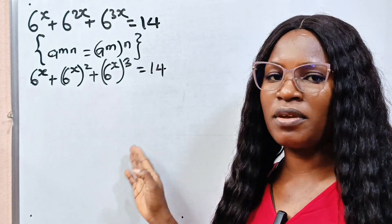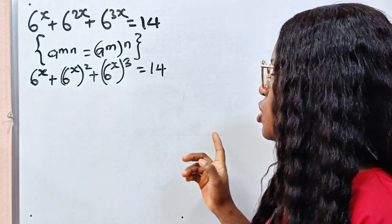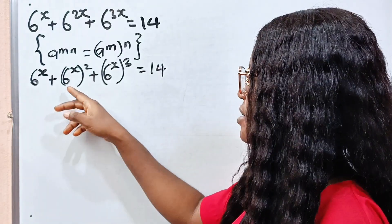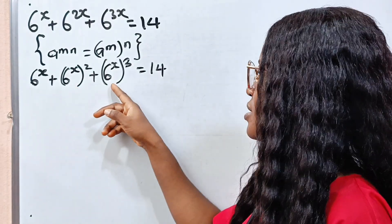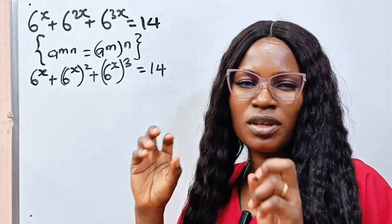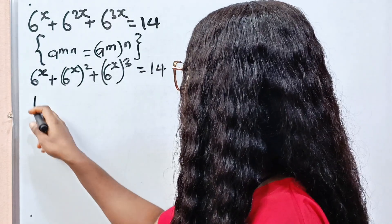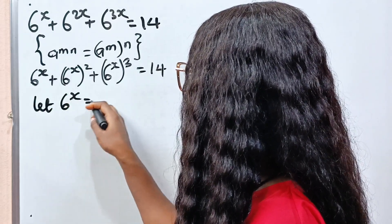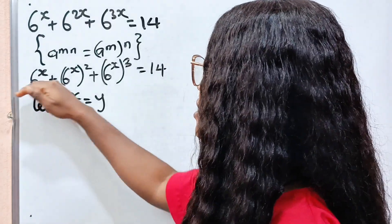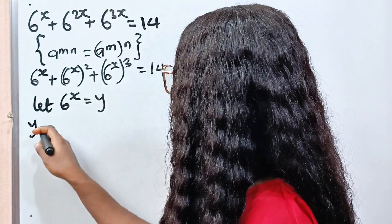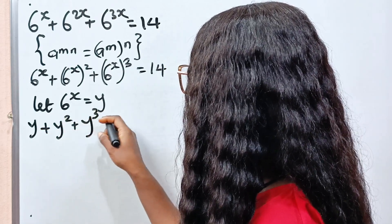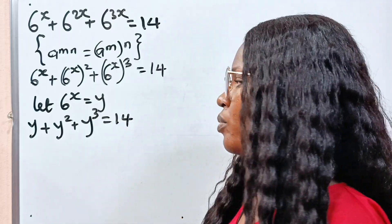Now we are trying to simplify this. We can see 6 to the power of x appearing in all three terms. So we can let 6 to the power of x equal y. That means this equation becomes y plus y squared plus y to the power of 3 is equal to 14.